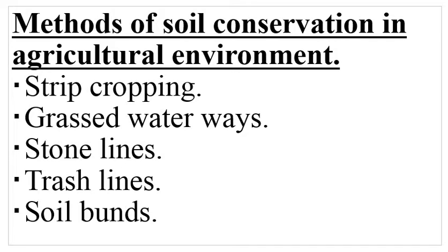We also have grassed waterways. A waterway is a channel through which water passes. When you say grassed waterway, that means it is a waterway in which there is grass planted in it. Grass is used to conserve soil because it is able to filter out soil particles and also to reduce the speed of runoff — runoff being the water that flows after rainfall.